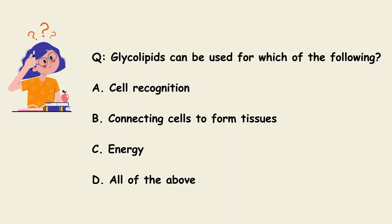Now the next question: glycolipids can be used for which of the following? A. Cell recognition. B. Connecting cells to form tissues. C. Energy. D. All of the above. The correct answer for this question is D, all of the above. Glycolipids can be used for all of the above — that is cell recognition, connecting cells to form tissues, and energy formation or energy storage.